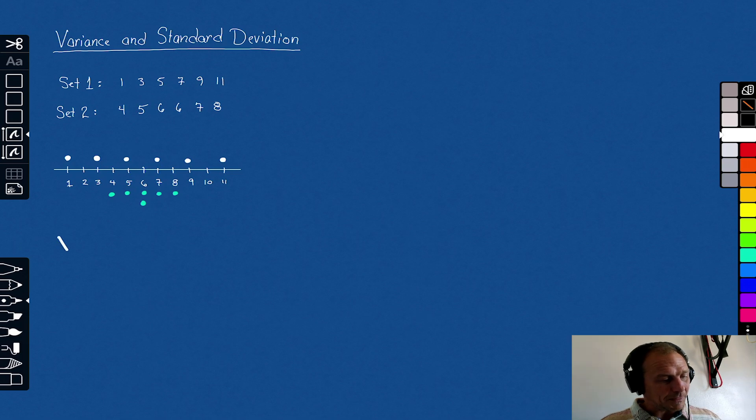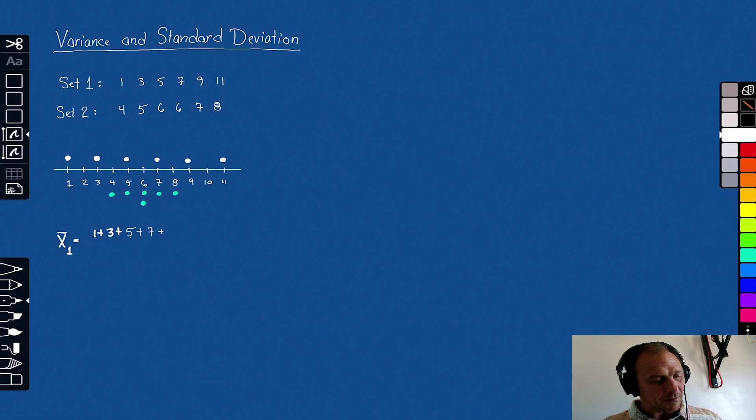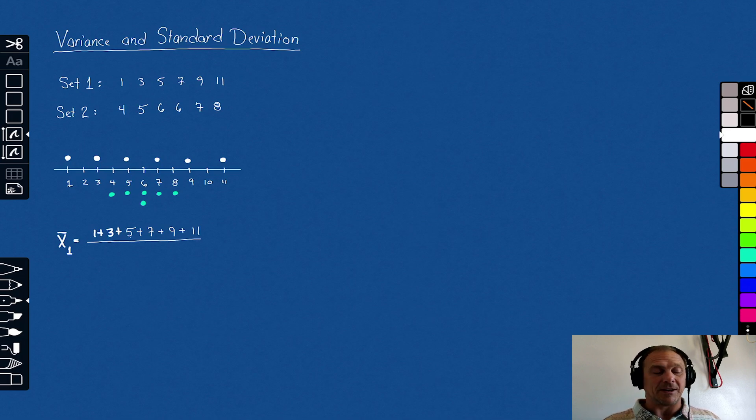Let's calculate the mean for data set one. The mean is going to be 1 + 3 + 5 + 7 + 9 + 11, all of that divided by the number of data values of which there are 6. One plus 11 is 12, 3 plus 9 is 12, 5 plus 7 is 12. Twelve times 3, that's 36. Divided by 6, this has a mean of 6.